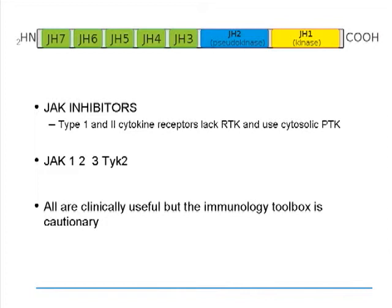The JAKs function to transmit a signal to the nucleus from type 1 and type 2 cytokine receptors, which are responsible for over 40 different cytokines. The first thing we should ask ourselves when we see a new biologic or immunomodulator is whether there are any tools in the immunology toolbox that can give us a notion of cautionary signals. The toolbox has two very strong pieces of equipment: preclinical models of knockout or transgenic mice, which tell us about functional biology, and primary immunodeficiency diseases where these molecules are defective.